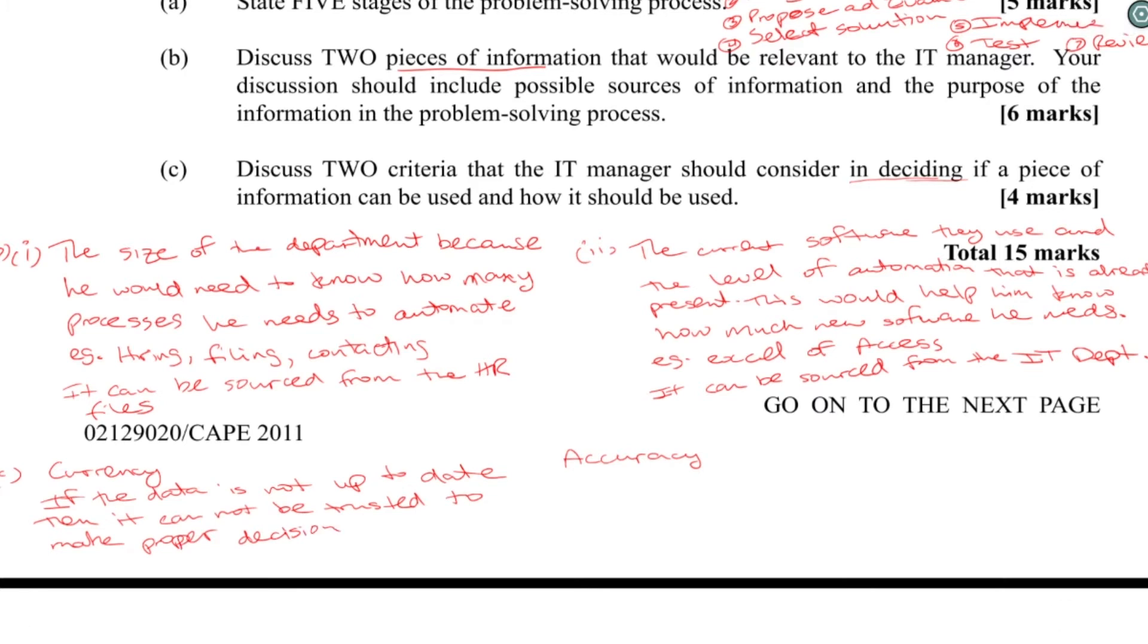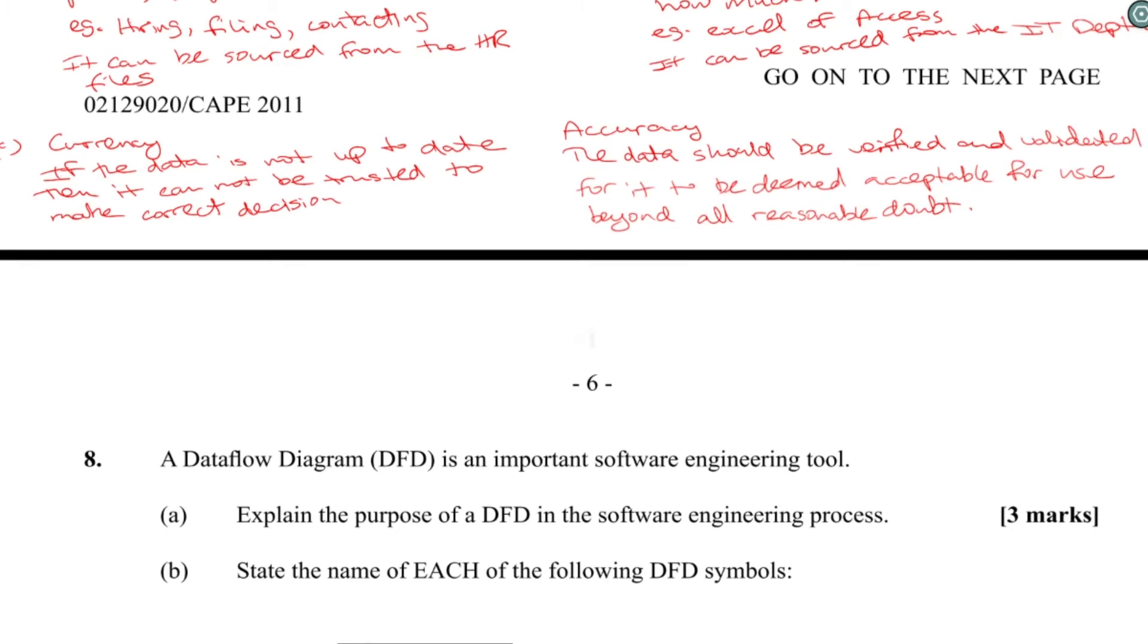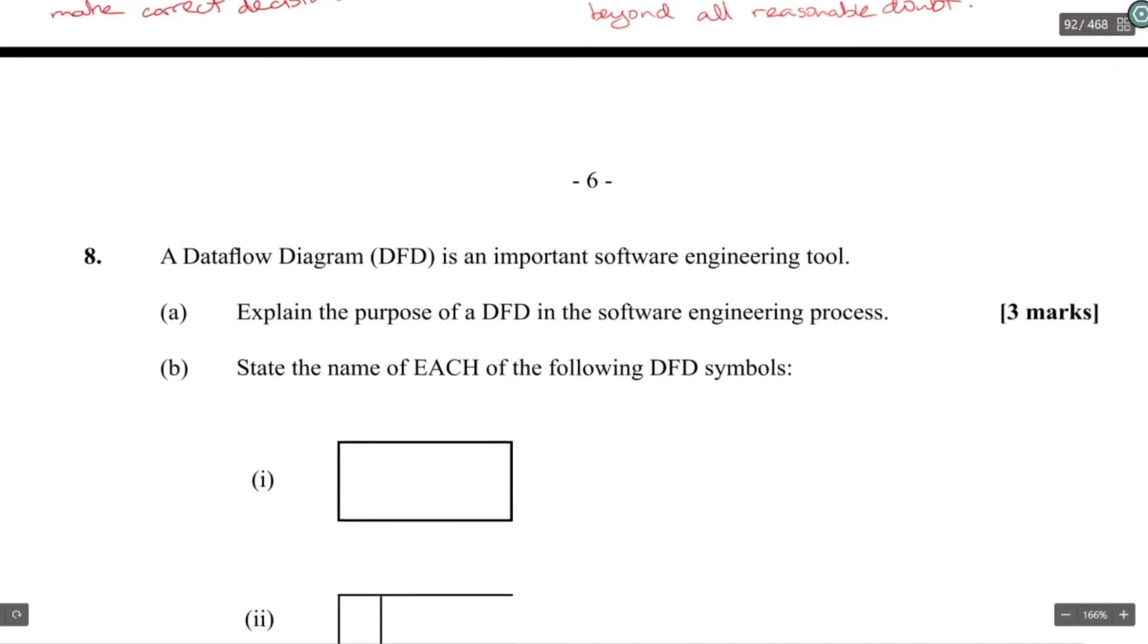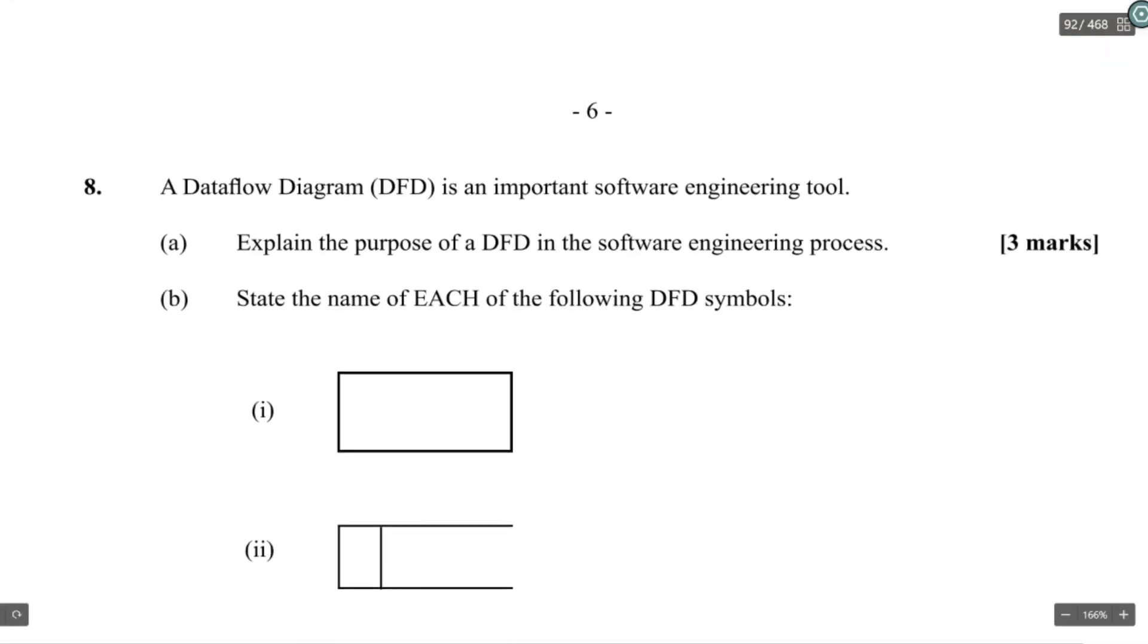To ensure that it's accepted, to be deemed acceptable for use to solve the problem. Beyond all reasonable doubt, so currency and accuracy usually two straightforward answers. All right. A data flow diagram is an important software engineering tool. Explain the purpose of a DFD in the software engineering process.